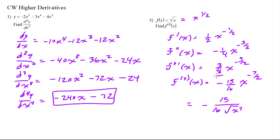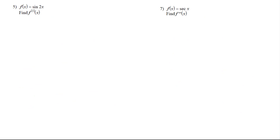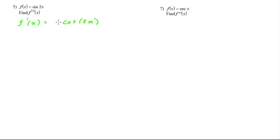Either of these forms would be fine. For number five, we have f of x equal to sine of 2x and we want to take the fifth derivative. The first derivative: the derivative of sine is cosine, so that's going to be cosine of 2x, and we take the derivative of the inside which gives us a 2.